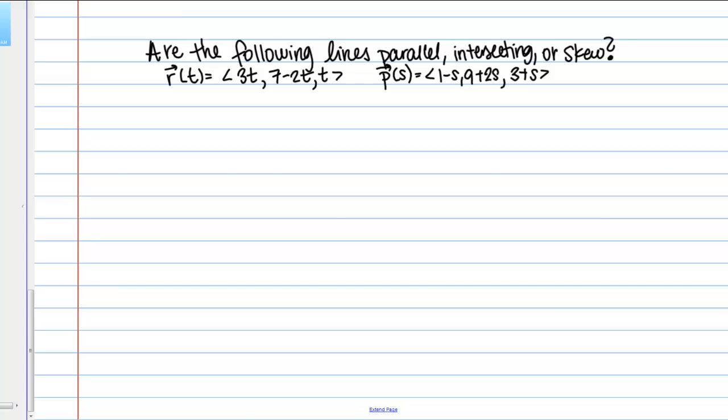In this example, we have two lines, R(t) and P(s), that I've written here. Our goal is to determine if they're parallel, intersecting, or skew.